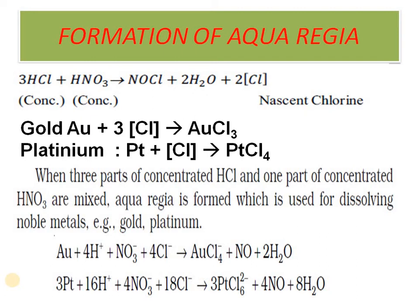Aqua regia is used to dissolve noble metals like gold and platinum. Gold (Au) is oxidized to AuCl₄⁻, meaning it reaches a +3 oxidation state. Platinum goes from 0 to a +4 oxidation state forming PtCl₄. PtCl₄ further reacts with HCl to give PtCl₆²⁻.